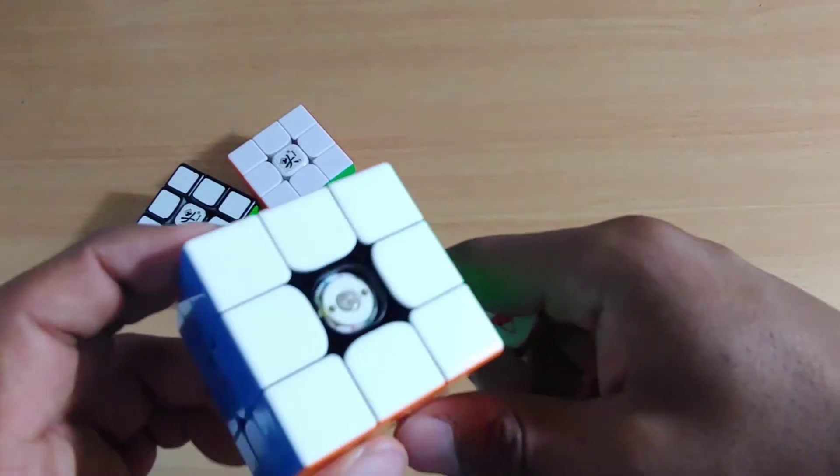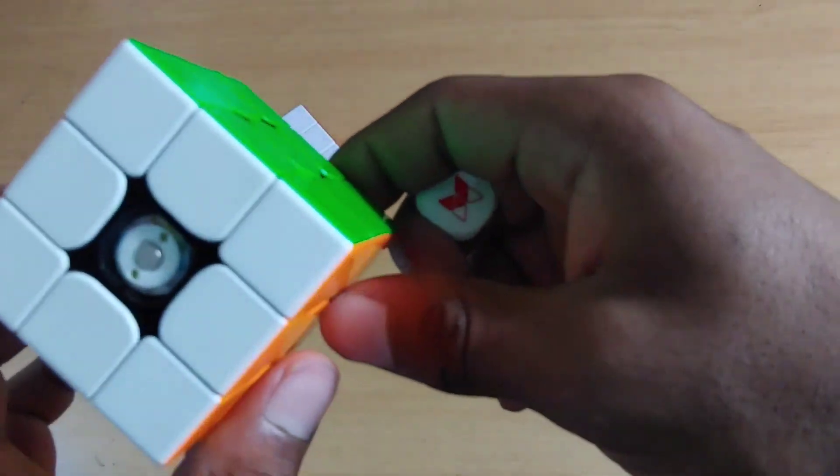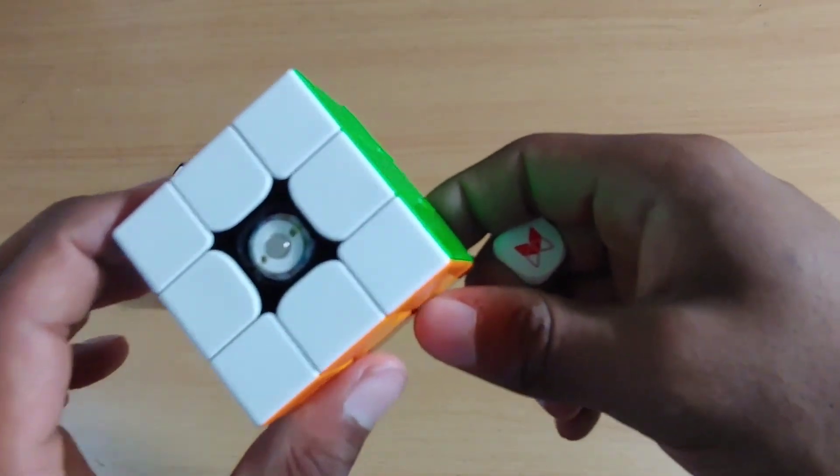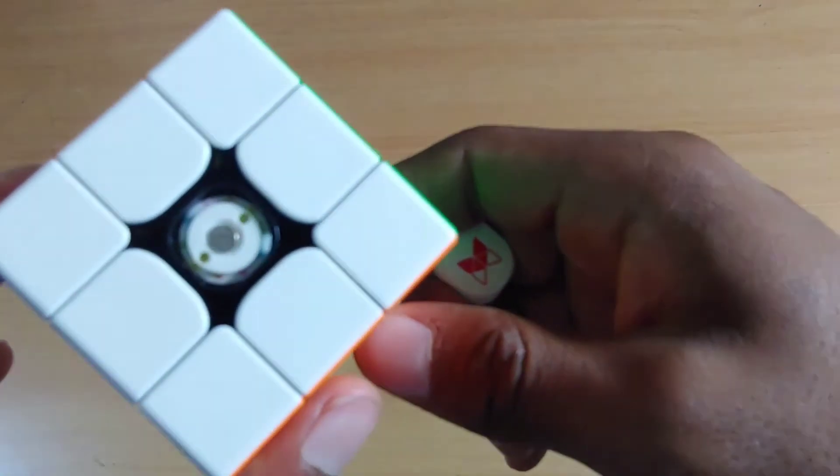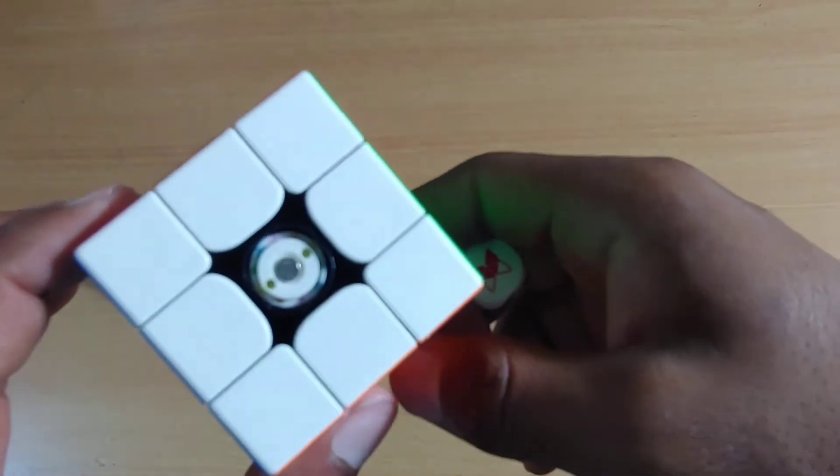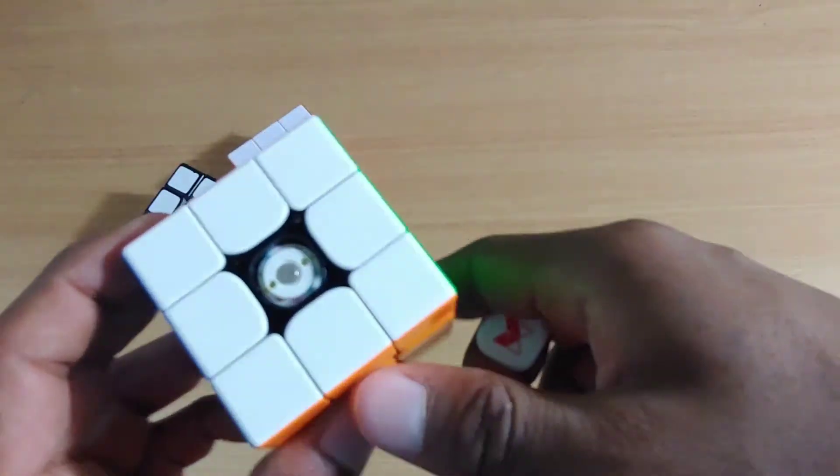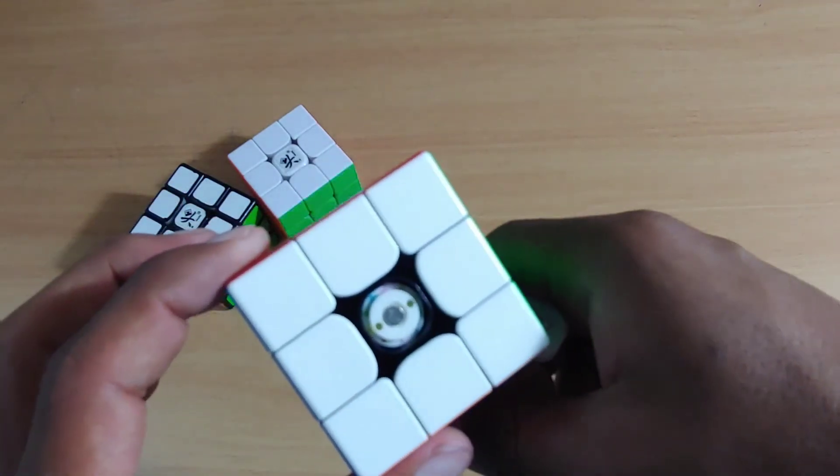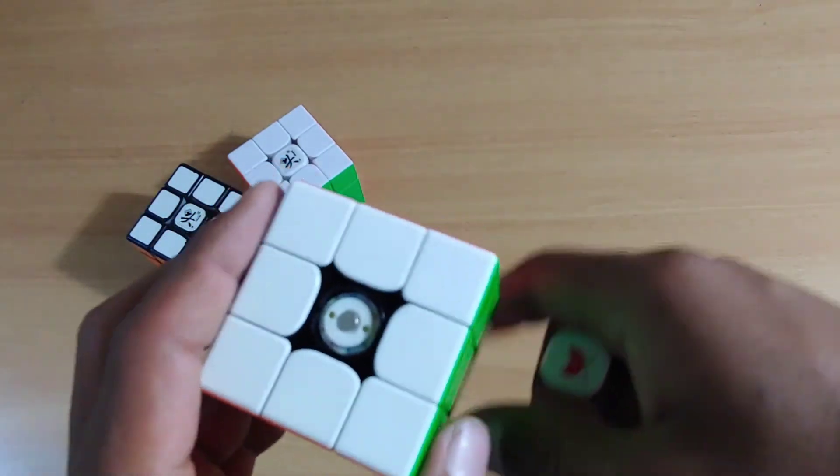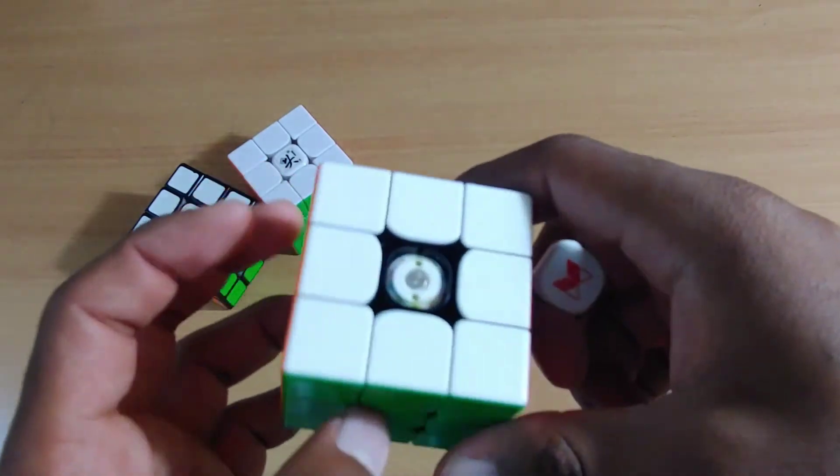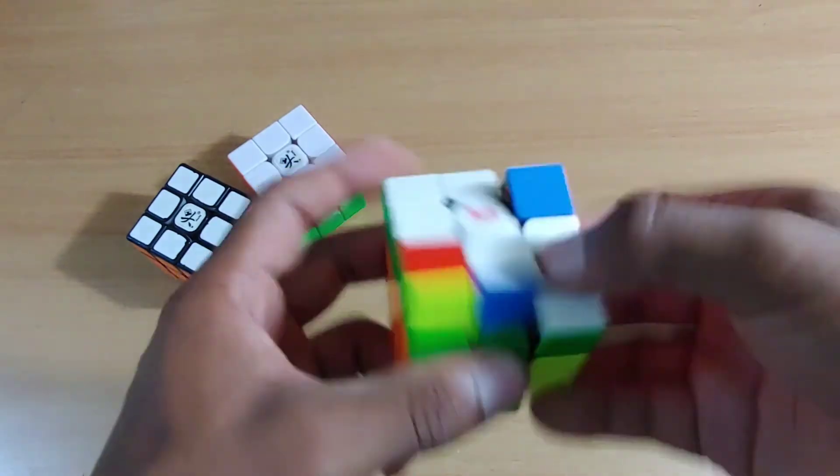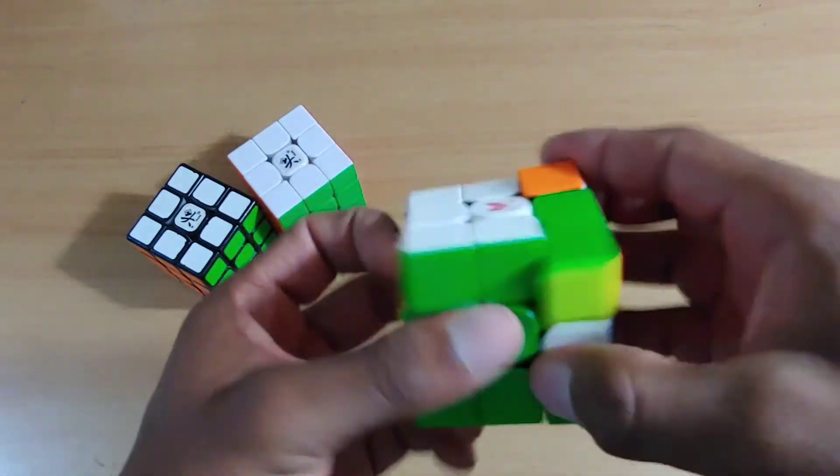And there's the adjustment system, which my camera will not focus on for some reason. But I'm sure you've seen it in other videos. It's like that rainbow core, which looks absolutely beautiful. And yeah, I'll adjust that to my liking later. But yeah, right now, first impressions, this cube, it's really, really good.